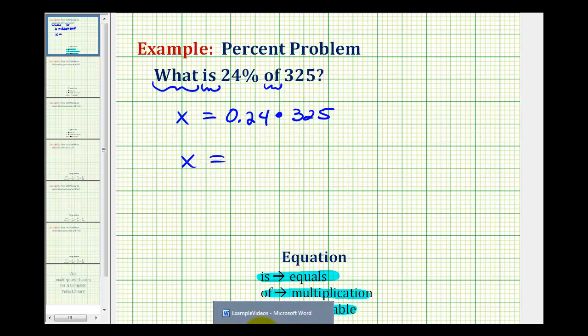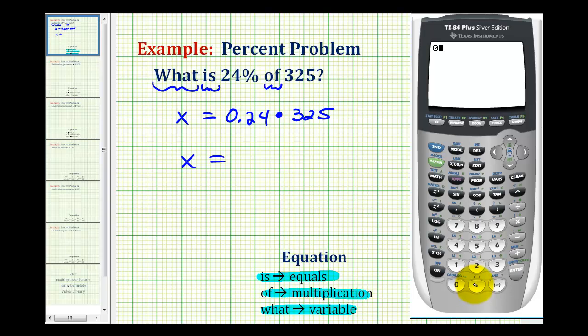So x is equal to this product here, so now we'll go to the calculator, and we'll type in zero point two four times three hundred twenty-five. So x is equal to seventy-eight.